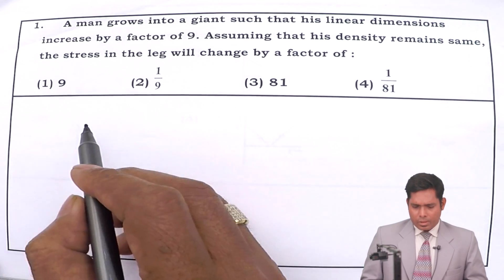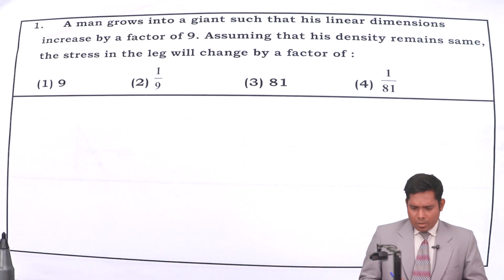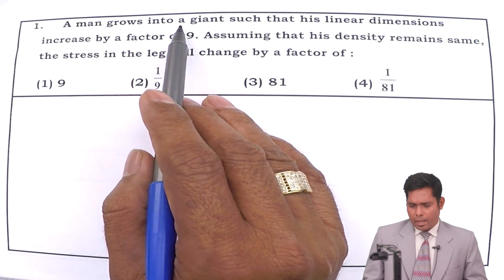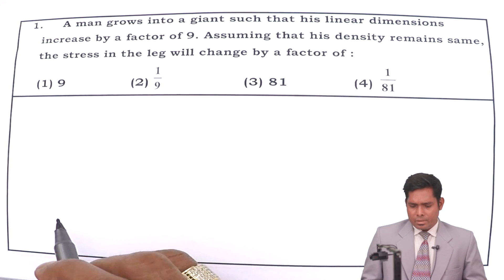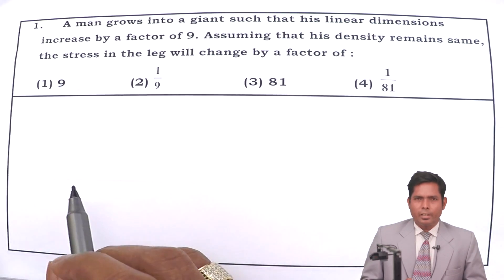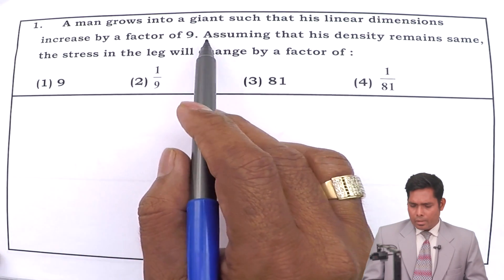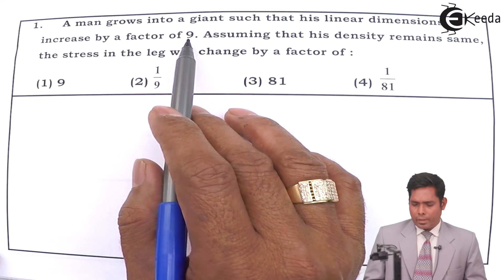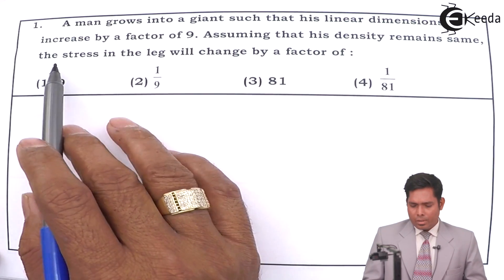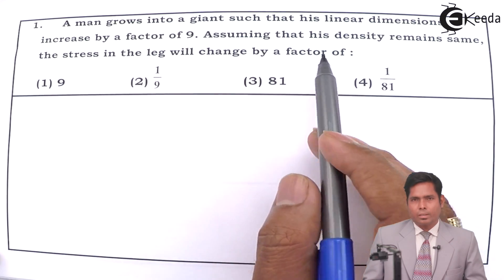Now the first question is: a man grows into a giant such that his linear dimensions increase by a factor of 9. The linear dimensions, wherever the dimensions are possible, it stands like this - this is one dimension and the other one is also another dimension. Increases by a factor of 9. Assuming that his density remains same, the stress in the leg will change by a factor of.